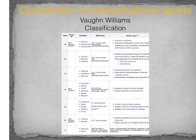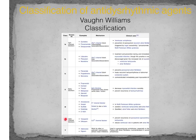Calcium channel blockers can do a couple of different things. Not only can they have negative chronotropic effects, but for muscles to contract you need calcium. If I block calcium, I have a decrease in chronotropy and to some extent inotropy in the heart. I can also prevent smooth muscles from contracting in blood vessels, causing a reduction in blood pressure.